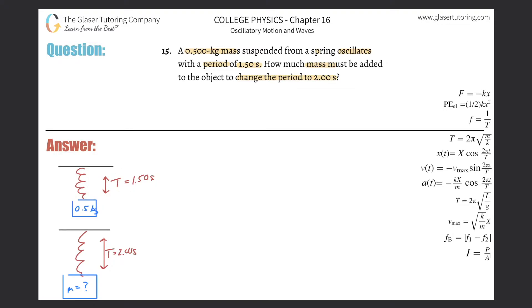What does period even mean? Well, period basically tells us the time for a single oscillation. That's what period is — it's the time per oscillation. Now, oscillation is basically the up and the down. The time it takes to go up and then come back down is going to be 1.5 seconds.